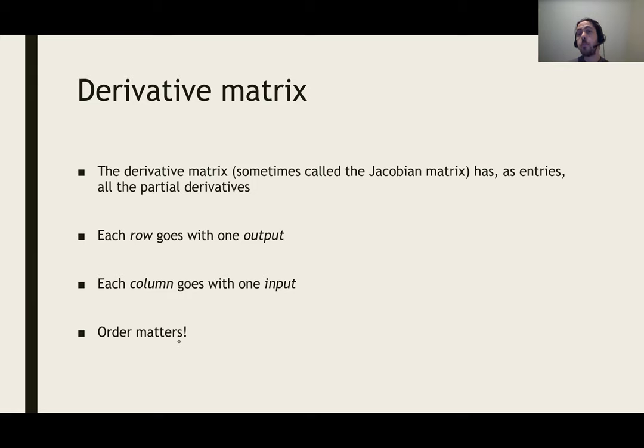This is sometimes called the Jacobian matrix and it has the same number of rows as outputs and the same number of columns as inputs.